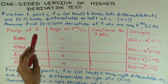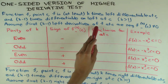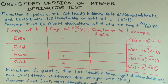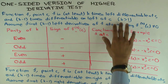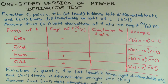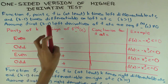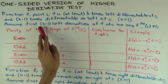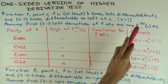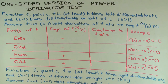Assume that the first k minus 1 left derivatives of f at c are 0 — so in particular the first derivative is 0, since k is at least 2 — and the kth left derivative at c is non-zero. The usual two-sided higher-derivative test says the first k minus 1 derivatives are 0 and the kth derivative is non-zero; now we're just doing the same on the left.